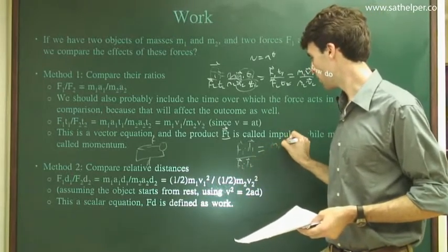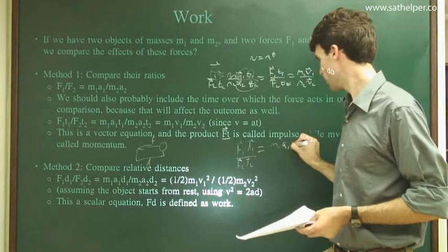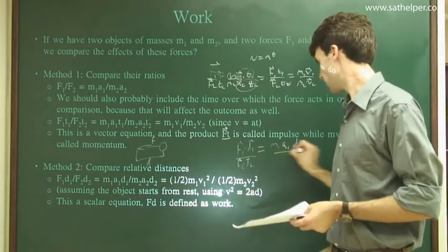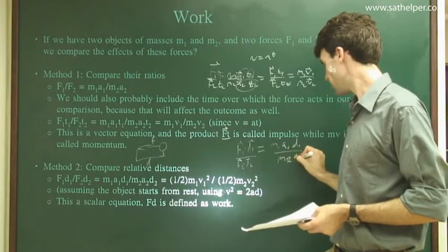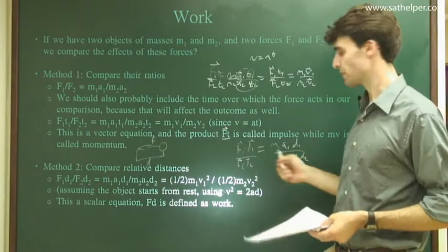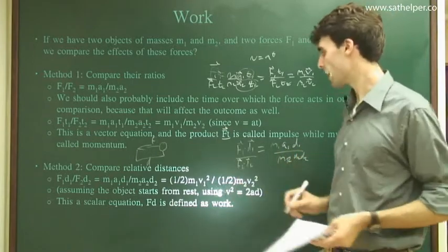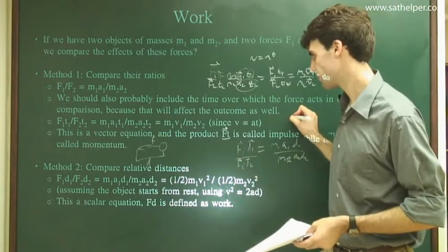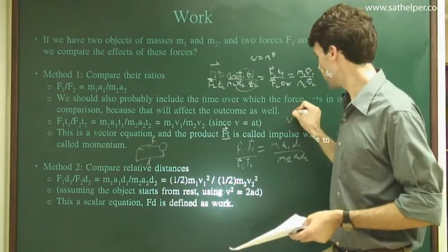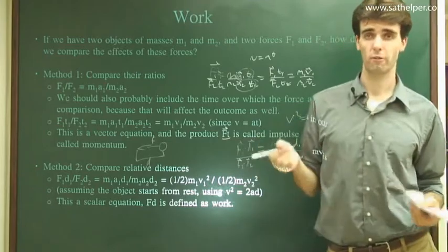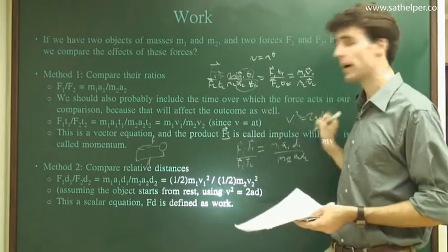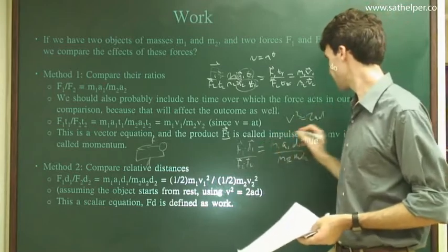Then we have M1A1D1 divided by M2A2D2. This is just F equals MA multiplied by D on each side. Again, remember that V squared equals 2AD, if we accelerate the object from rest. VF squared equals VI squared, if VI is 0, we'll have this relationship.